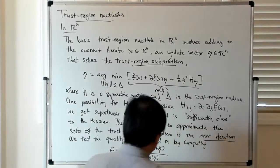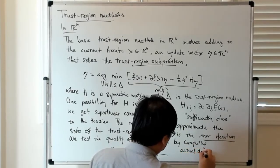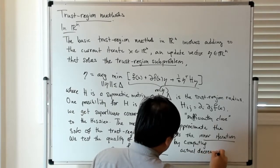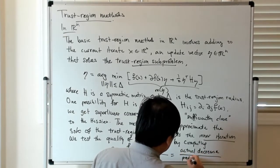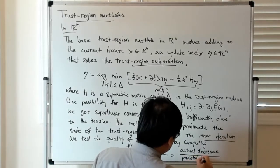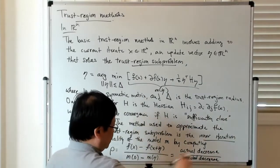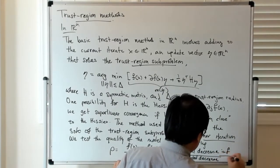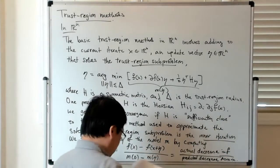So essentially, this is the actual decrease divided by the predicted decrease. So the actual decrease in F over the predicted decrease from the model M.